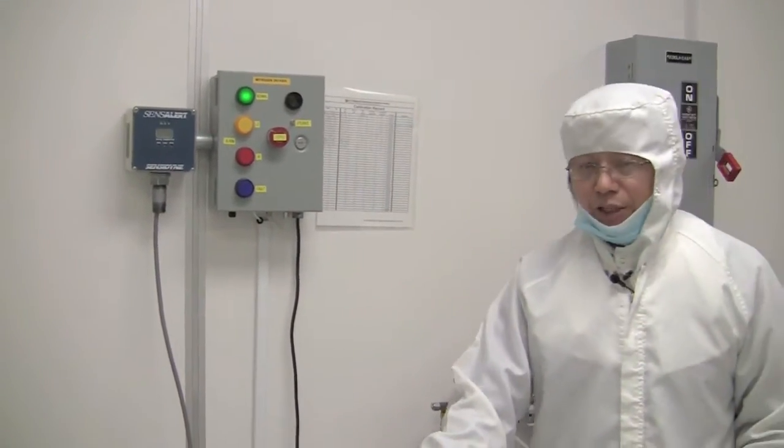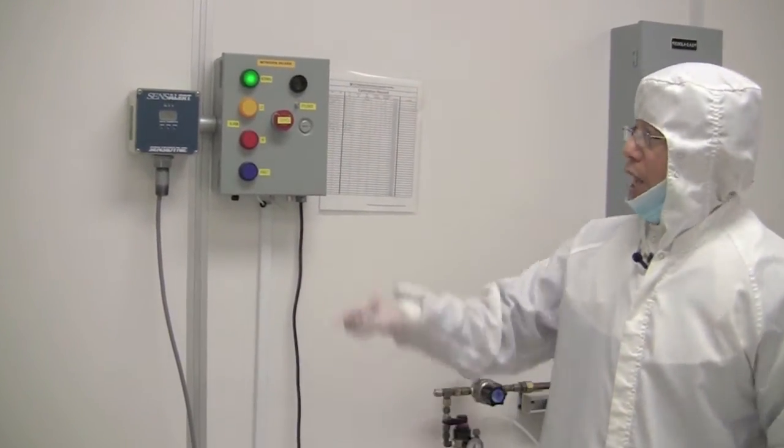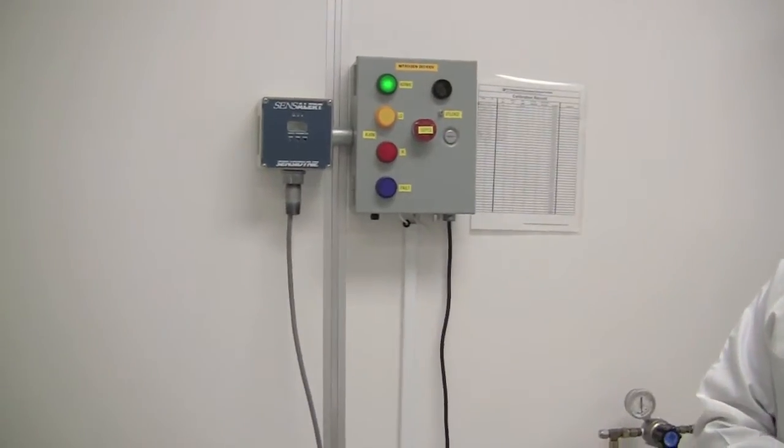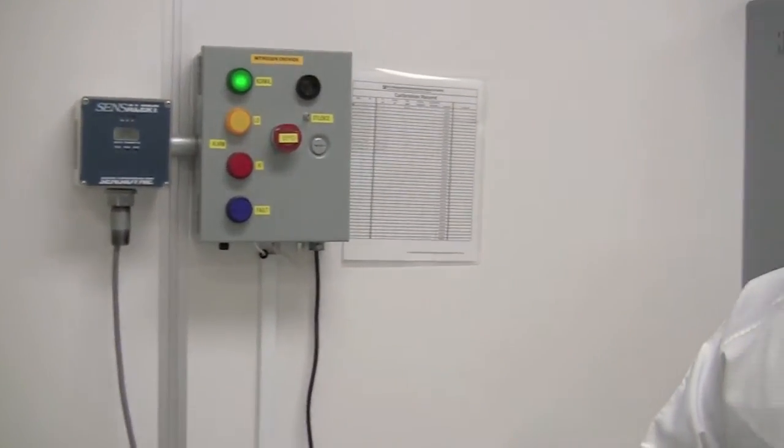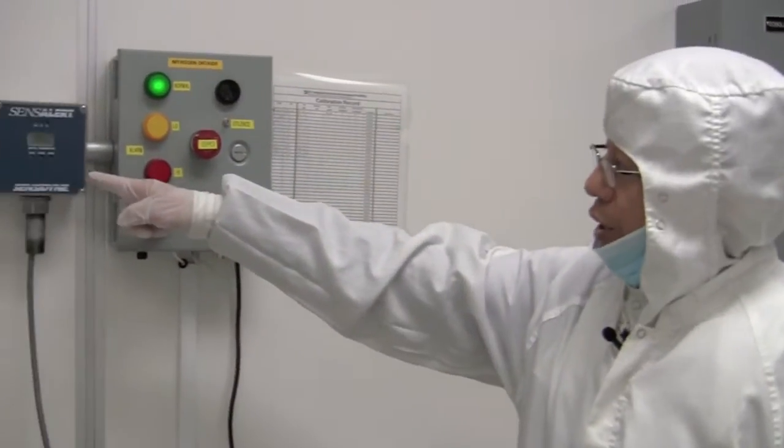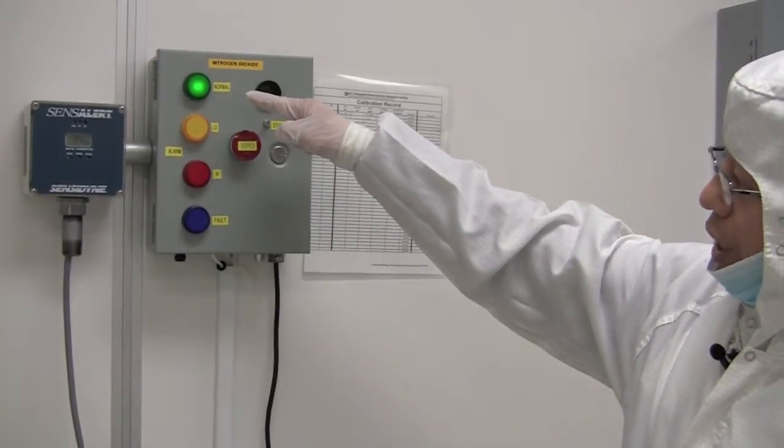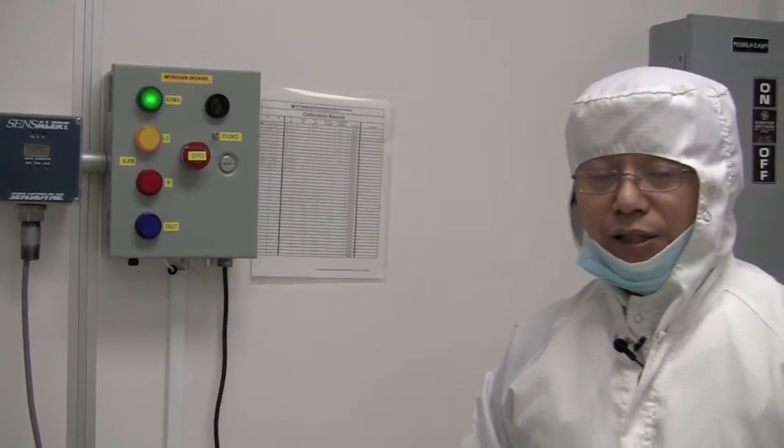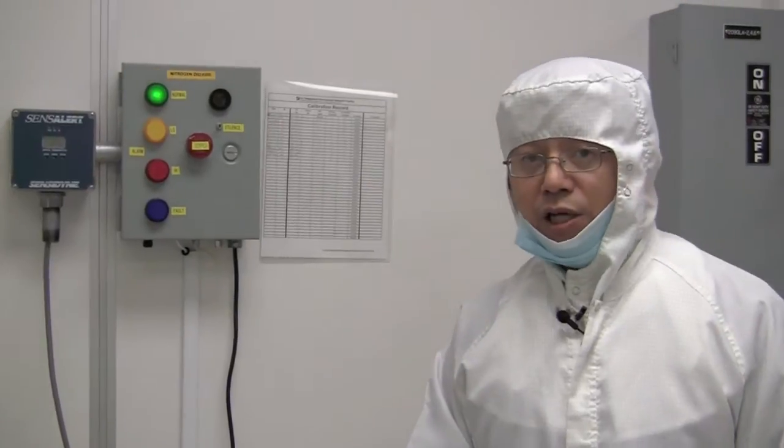Inside the cabinet, we also have nitrogen dioxide, which is hazardous. So we have a detector here. Make sure the green light is on. If the red light is on, you should immediately exit the clean room and inform the staff.